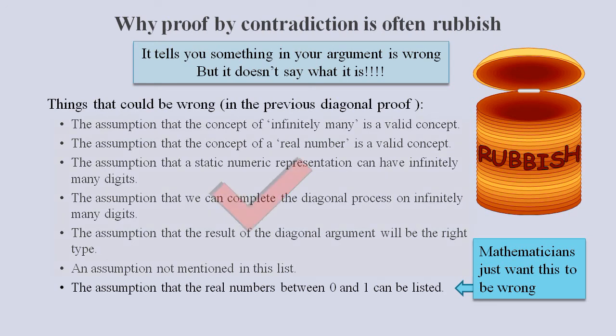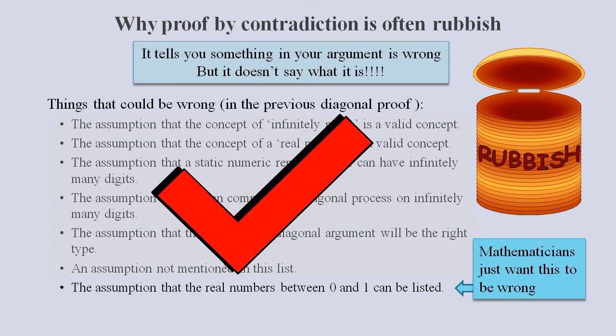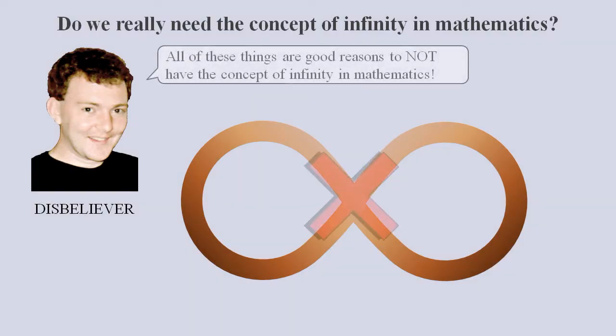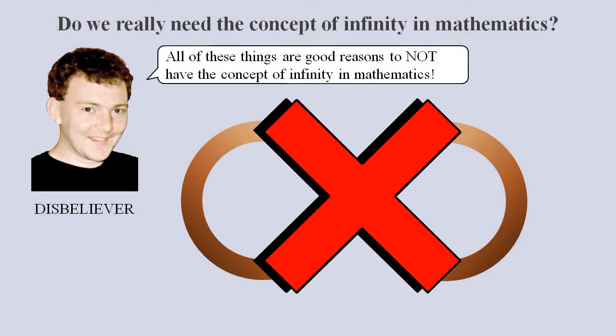In other words, they simply choose what they want to prove as being the thing that they have proved. This argument is nothing more than complete and utter rubbish. For a disbeliever, there is not one single convincing argument for why we need the concept of infinity in mathematics.